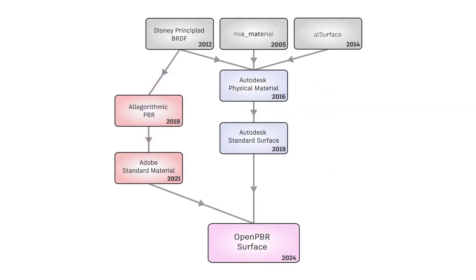This model is an evolution of the popular Autodesk standard surface model, incorporating improvements from several other models such as Adobe standard material. It builds on top of these production proven models, but also includes several important enhancements and updates. So let's dive into the details of this powerful model.